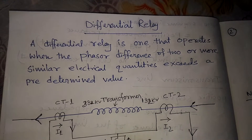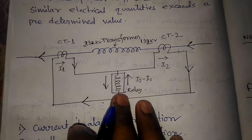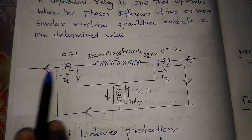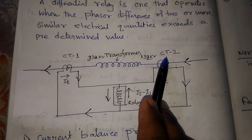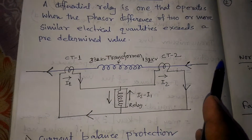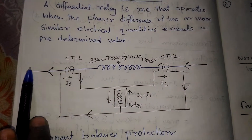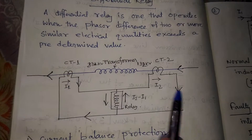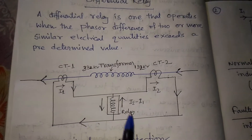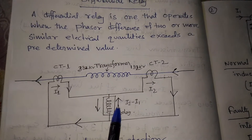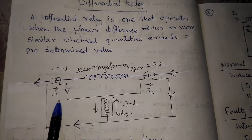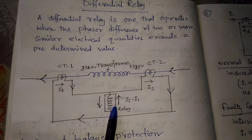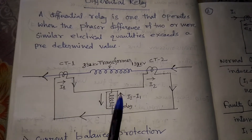Suppose in a circuit, current is flowing in normal condition — I1 current and I2 current are flowing. As far this diagram is concerned, if it is a transformer, this is the primary and this is the secondary CT. The CT current will flow in the opposite direction. So I1 current is flowing in one direction and I2 current in the other direction. The current flowing through the relay coil is I2 minus I1. If I1 and I2 are equal to each other, then zero current is flowing through the operating coil, so the relay will not operate and trip the circuit breaker.